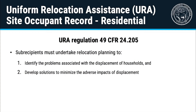Federal regulations have a series of information gathering and record-keeping requirements to ensure that displaced households have minimum adverse impacts as a result of their displacement. URA Regulation Title 49 CFR Part 24.205 requires that subrecipients undertake relocation planning to identify the problems associated with the displacement of households and develop solutions to minimize the adverse impacts of displacement.